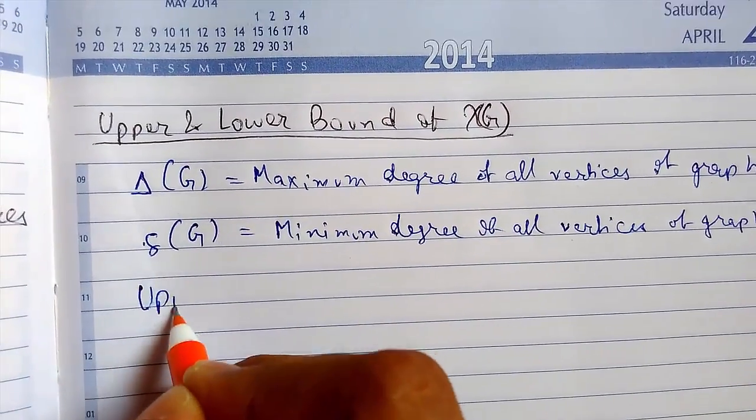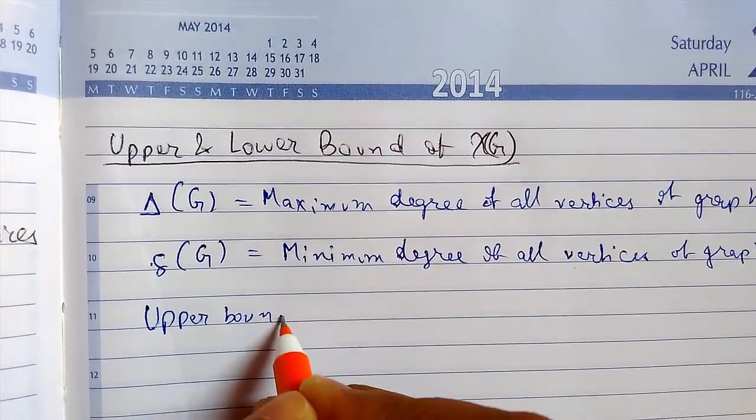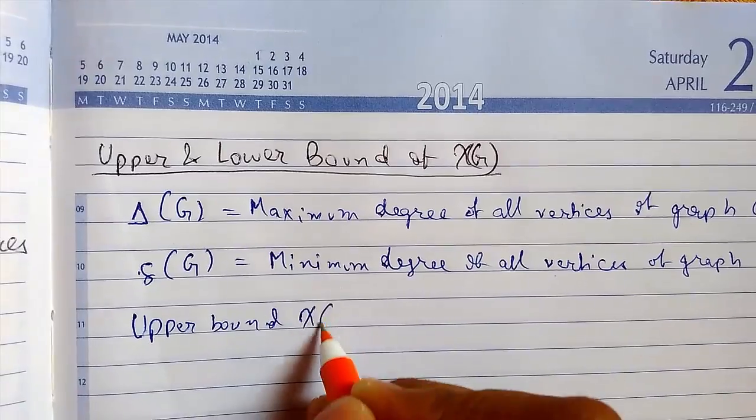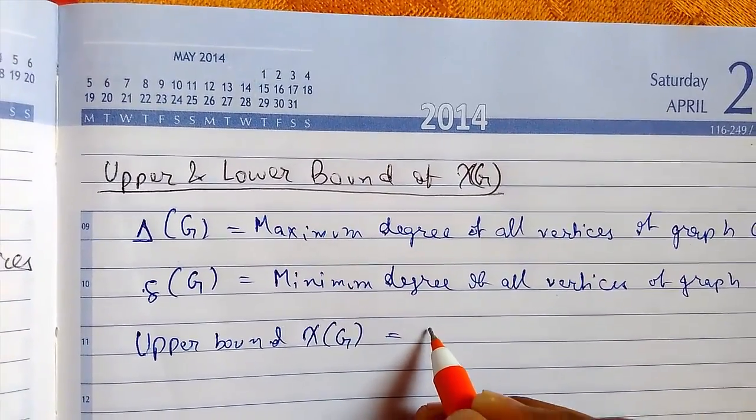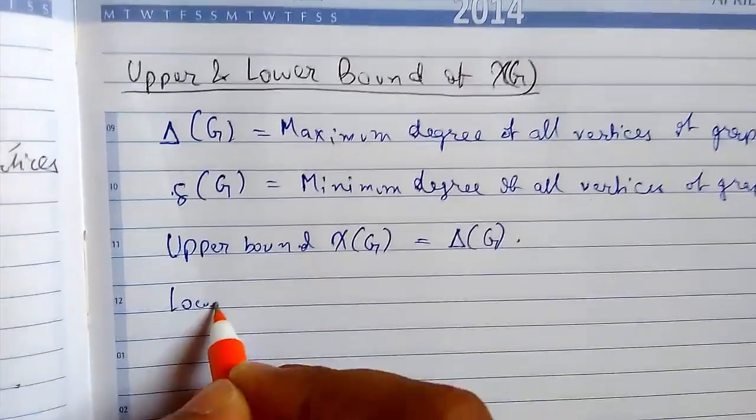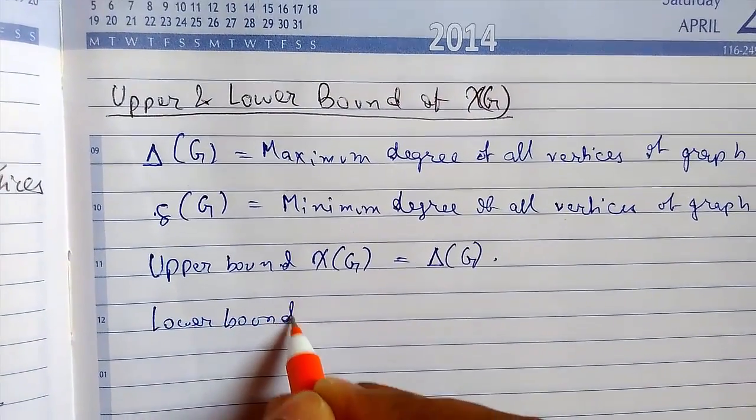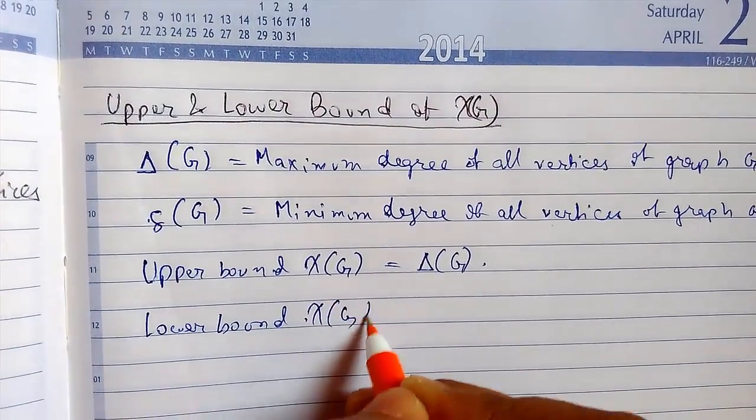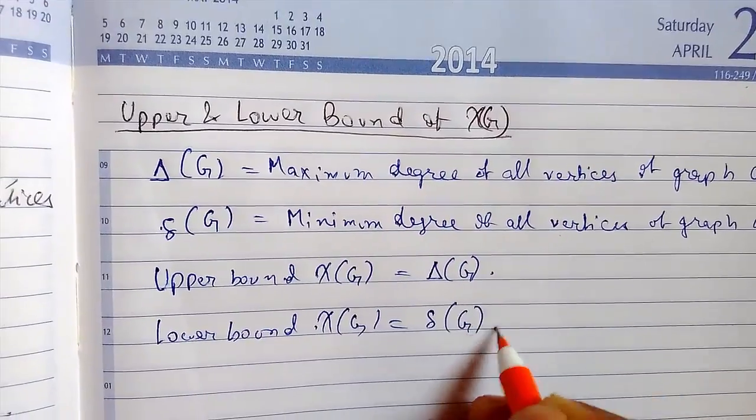So we can define the upper bound of chromatic number that is equals to Δ(G) and the lower bound is given by δ(G).